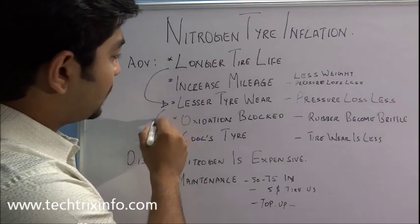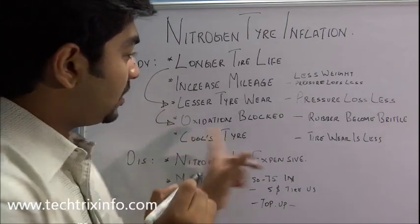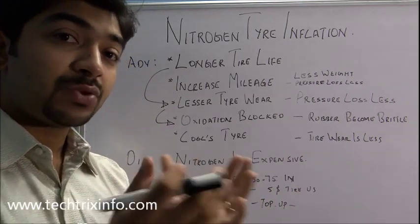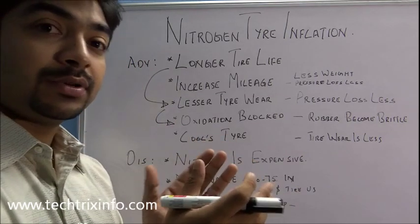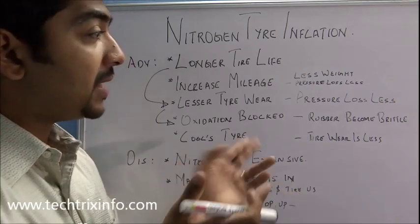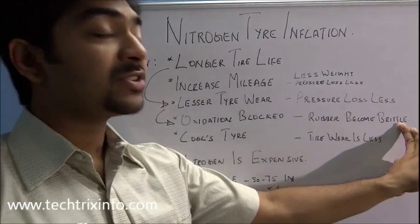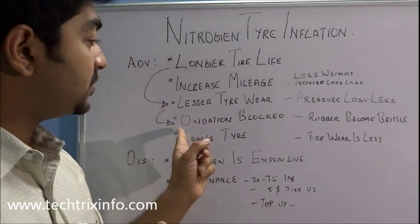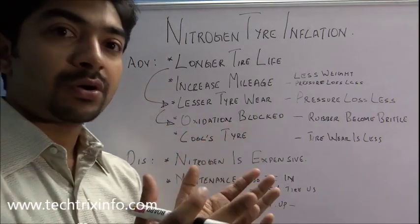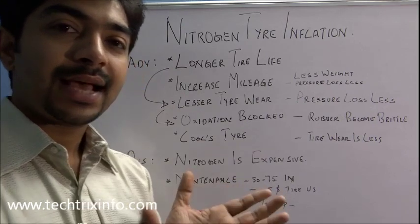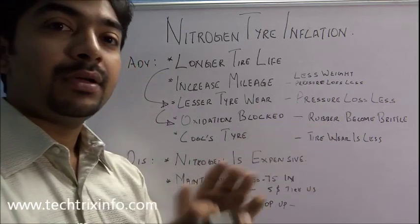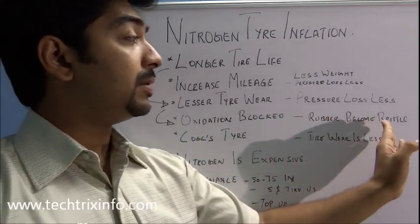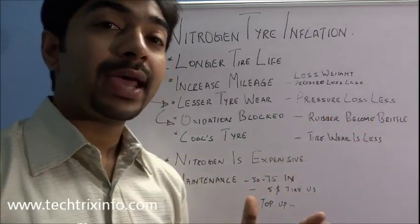The second part is that oxidation is blocked. In compressed air we have oxygen, and this oxygen reacts with the rubber causing oxidation, which makes the rubber brittle. A brittle rubber has a high chance of blowout. But when nitrogen is used, this oxidation is blocked because there is no oxygen content, so the rubber will not become brittle and blowouts can be avoided.